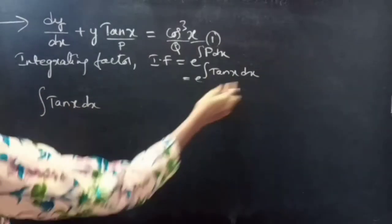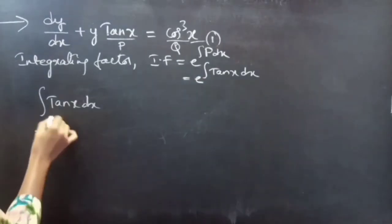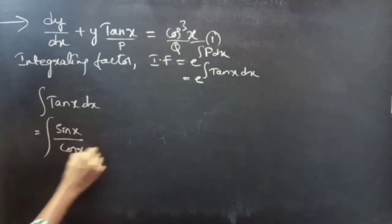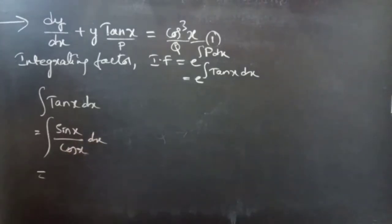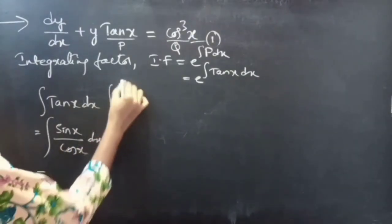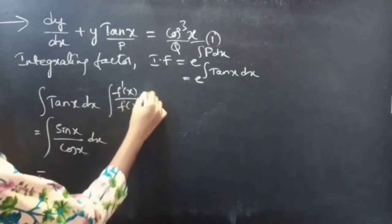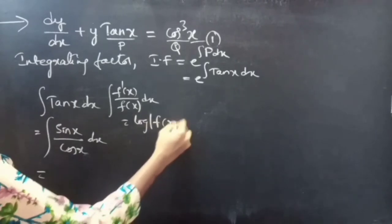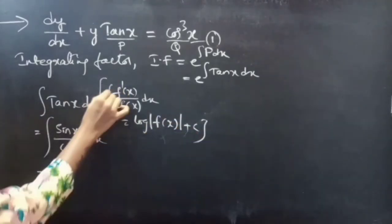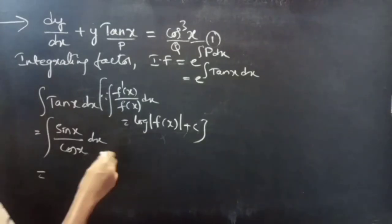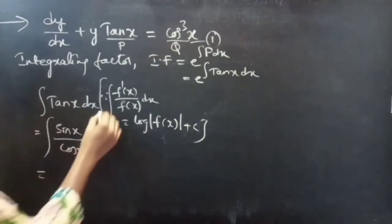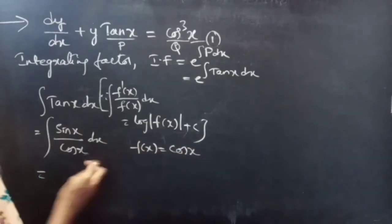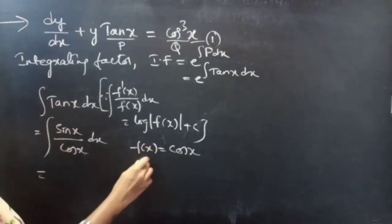We have the integral of tan x dx, which is equal to sin x by cos x. Compare this with the formula: integral of f'(x)/f(x) dx equals log|f(x)| plus constant C. For f(x) equals cos x, consider cos x as f(x).